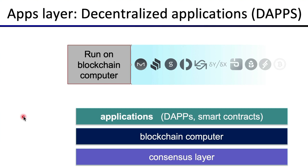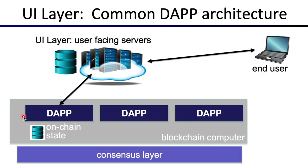It's a new way of writing programs: it requires new languages and is quite different from traditional programming. The fourth layer is the layer that interacts with end users. We have the consensus layer at the bottom, the blockchain computer on which the programs execute. This blockchain computer is typically a virtual machine emulator. The dApps are programs that run on top of the virtual machine. The public interacts with various cloud servers that then themselves interact with these programs running on chain.